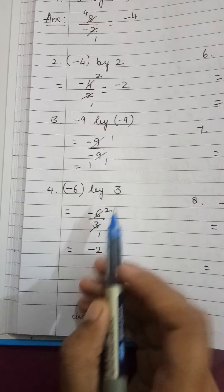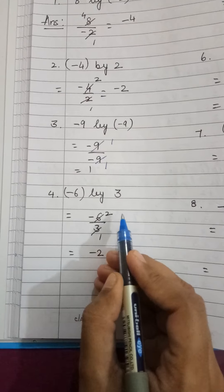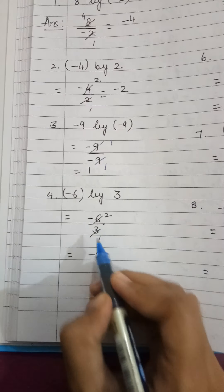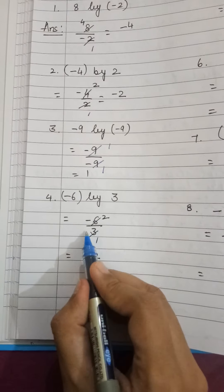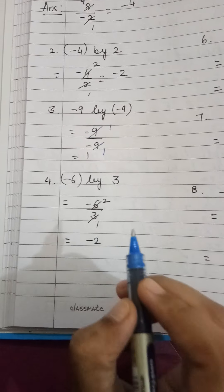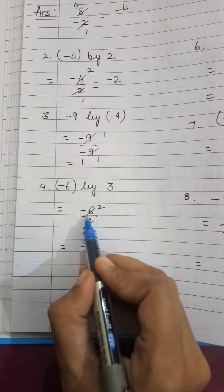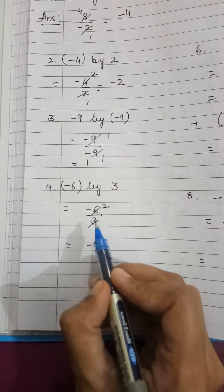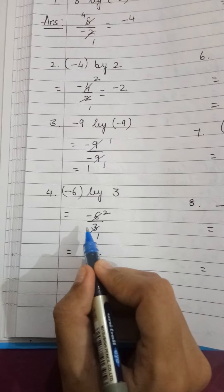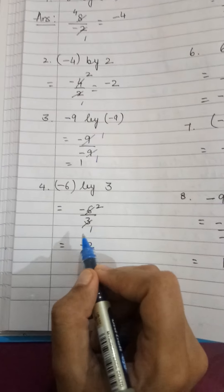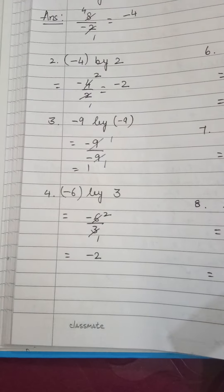Minus 6 you have to divide by 3. 3 ones, 3 twos — when you divide it, the answer is 2 but with the negative sign because plus minus is minus. So you just have to cancel these, keep them in the simplest form, and then you have to see the signs — which sign will come, plus or minus.